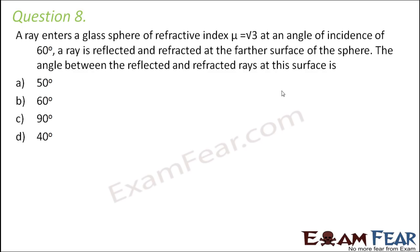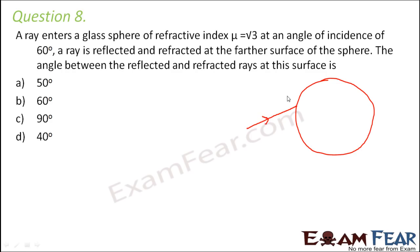Let us first draw a diagram to understand the question better. This is the glass sphere and this is the ray of light entering it. Let us draw a normal to the surface — this will be the angle of incidence. As the ray enters from air to glass it undergoes refraction, giving us the refracted ray. We call this angle of refraction R1.